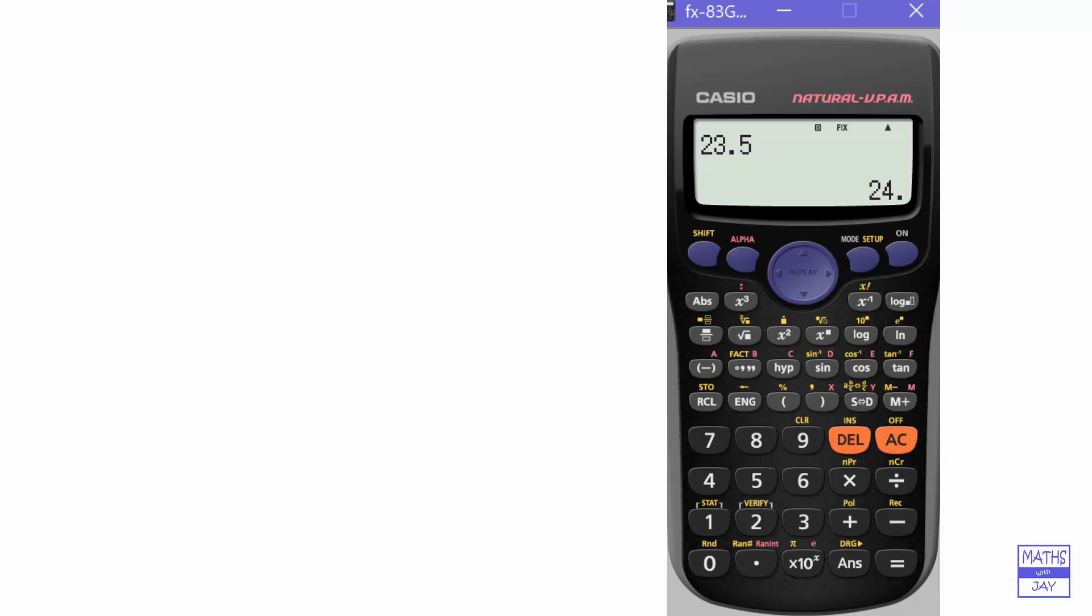So let's try another number. 59.2 equals 59 and so on. So any number you want to round to the nearest whole number, you just fix the number of decimal places to zero and then input the number and do equals.